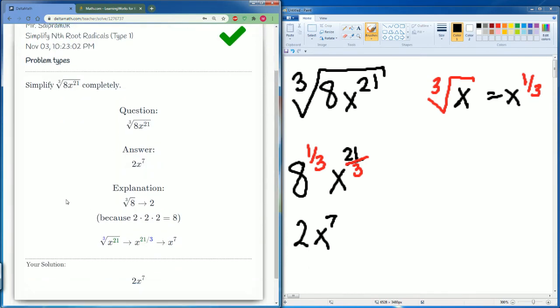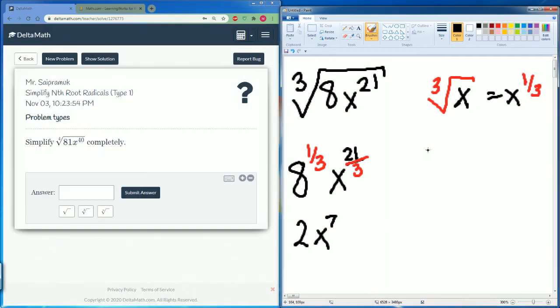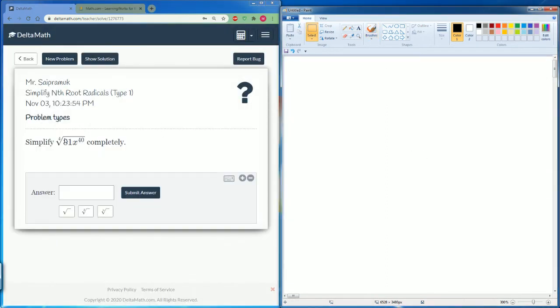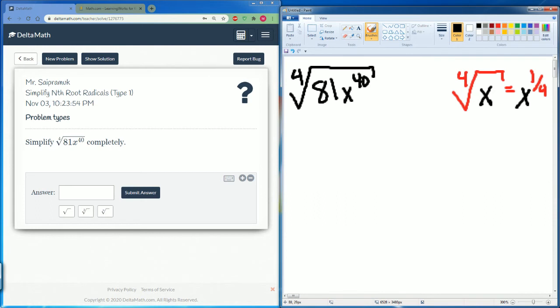There you go. Now it's to the 4th, so that means if it's 4 radical, that means it's to the power of 1/4. Okay, so we have the 4th root of 81x to the 40.